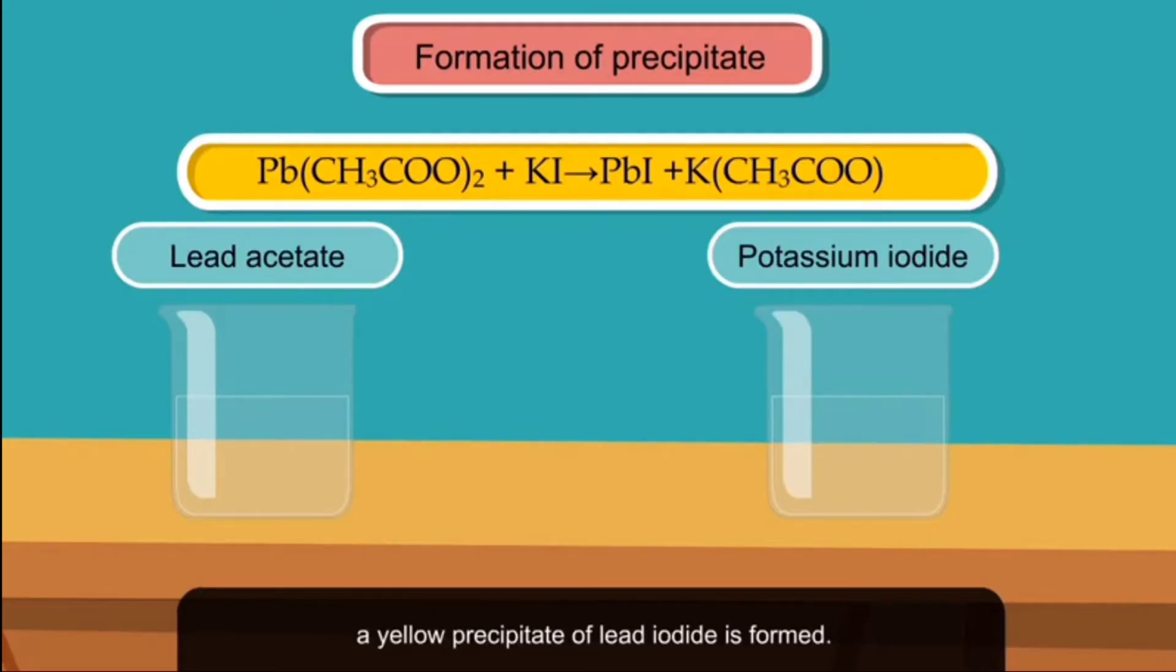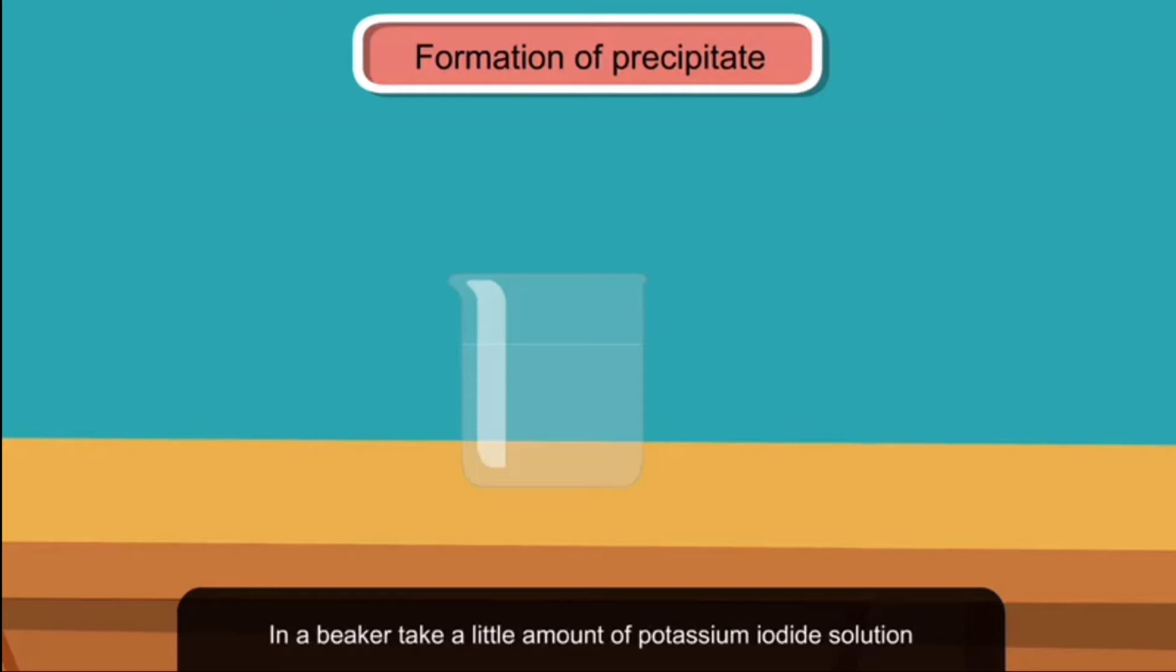In a beaker, take a little amount of potassium iodide solution and add a few drops of lead acetate solution to it. You will observe that a yellow precipitate of lead iodide is formed.